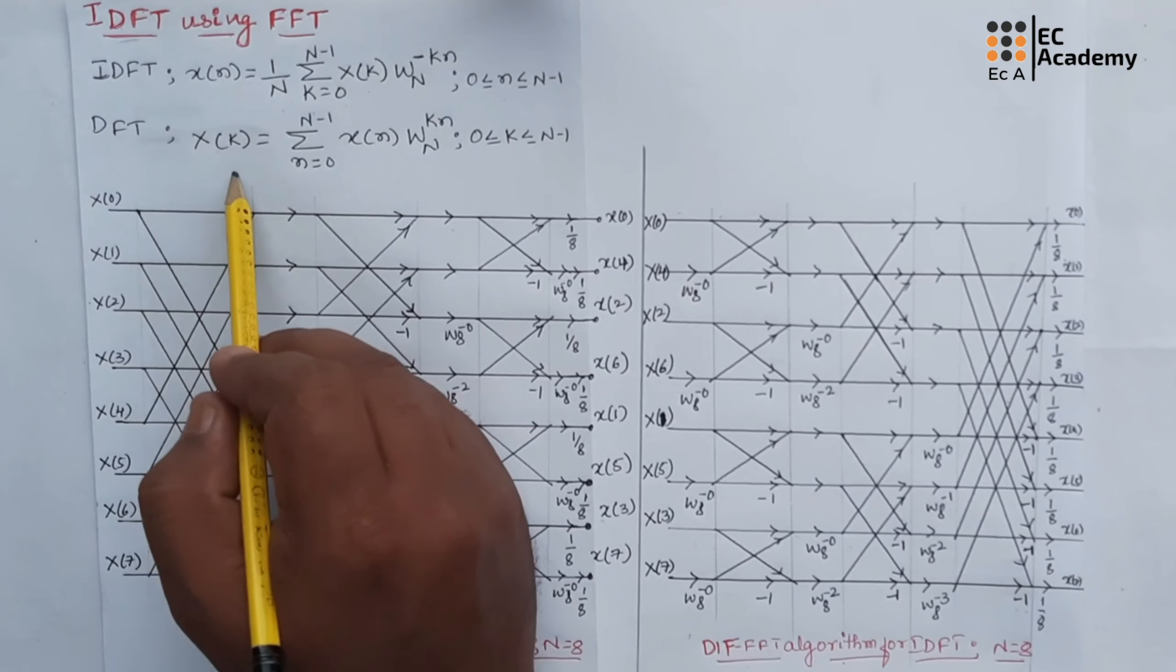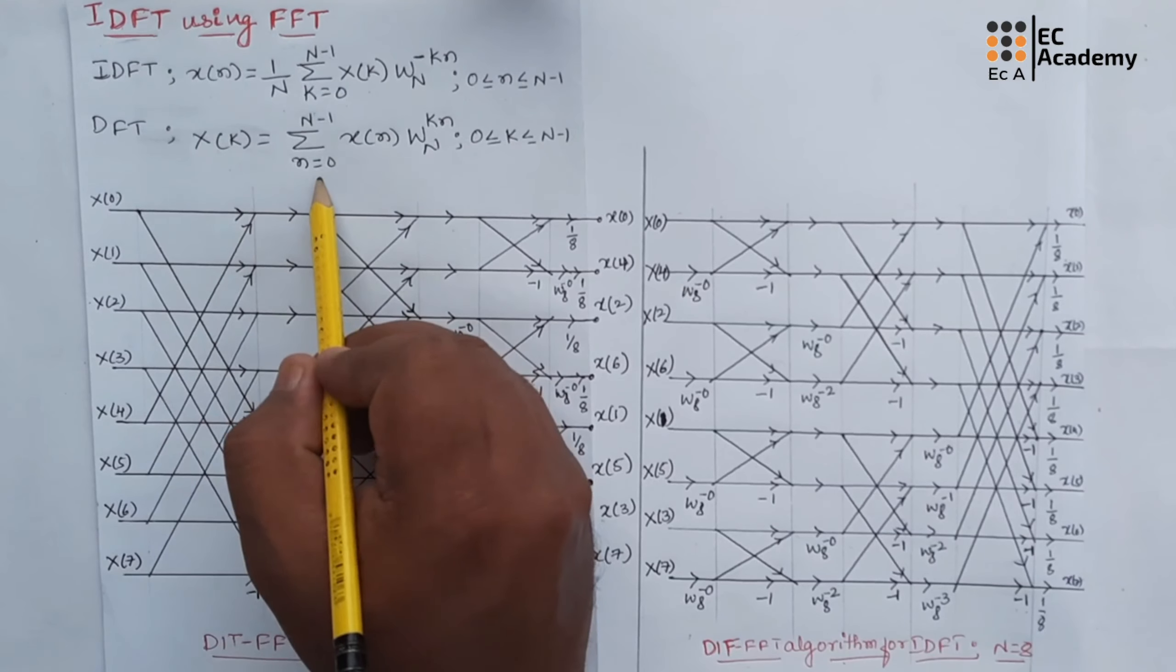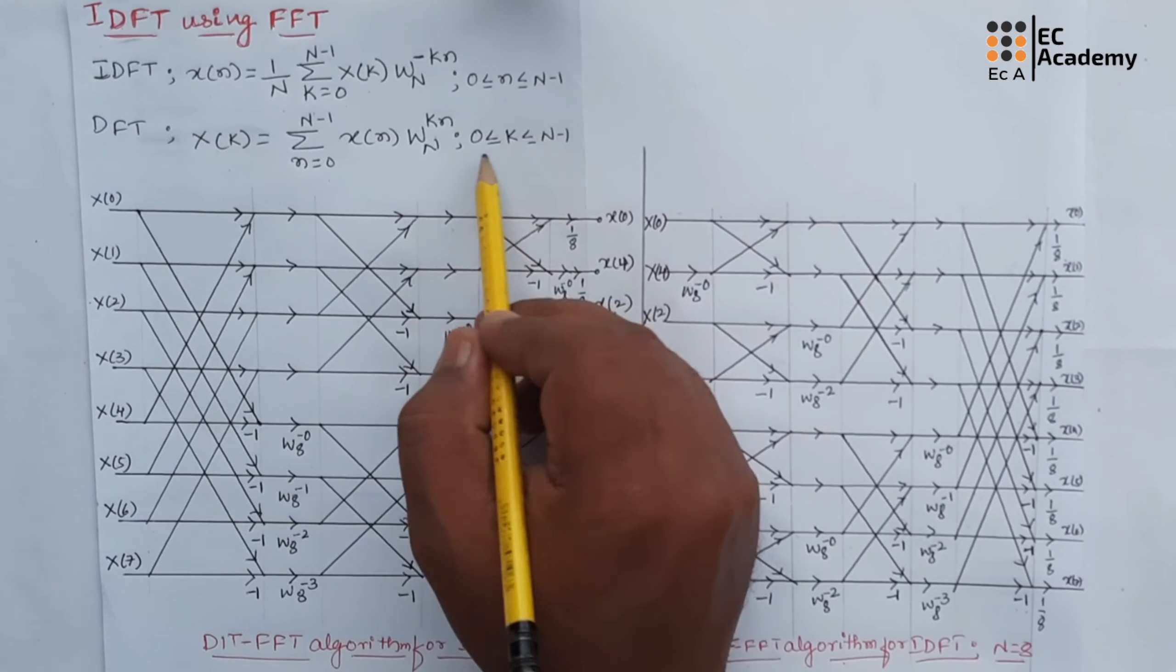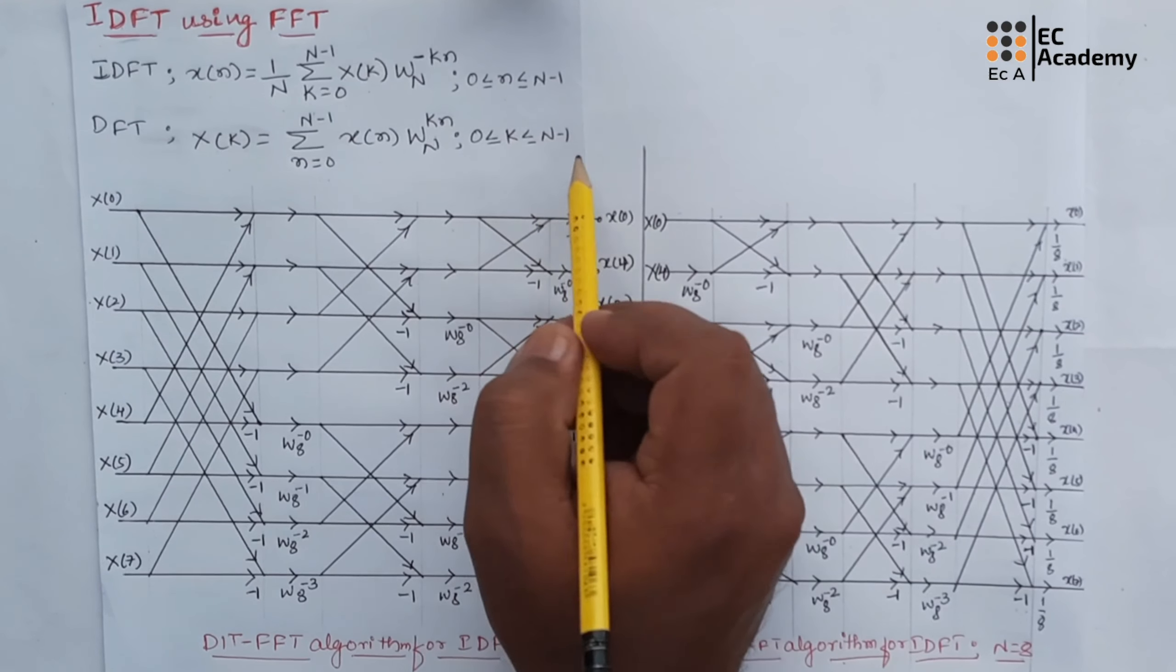And DFT can be given as x(k) = Σ(n=0 to N-1) x(n)·W_N^(kn), where k is varying from 0 to N-1.